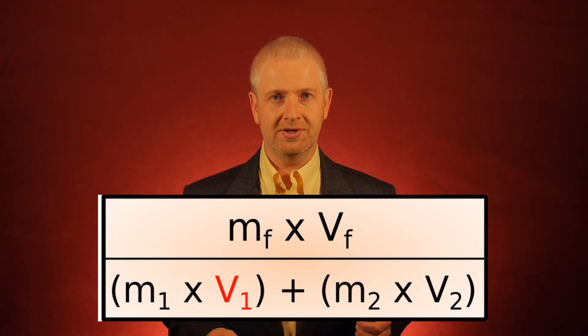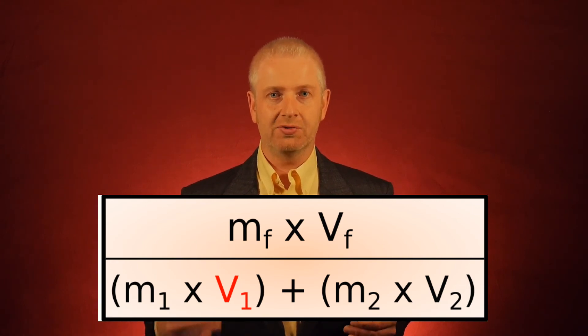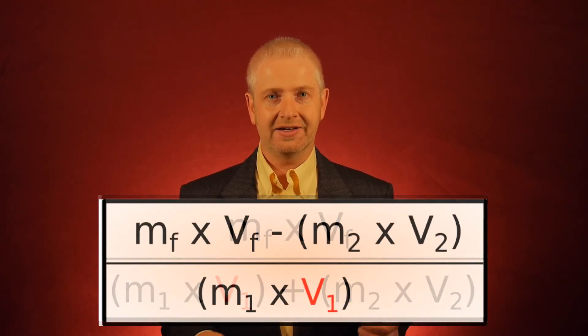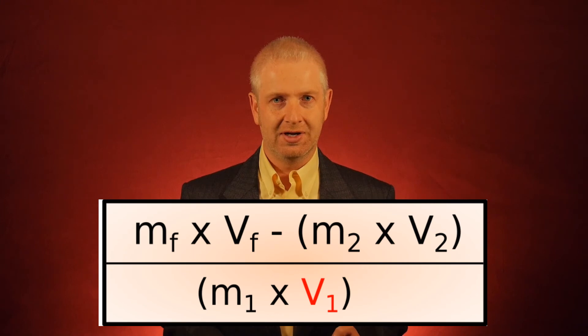So rule number one: change the sign, change the line. That M2 times V2 becomes negative and goes on to the other line. So now what I have for my square is I have Mf times Vf minus M2 times V2. And now, is it on the top of the square?